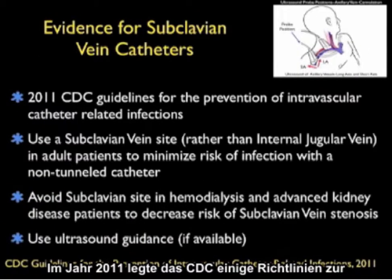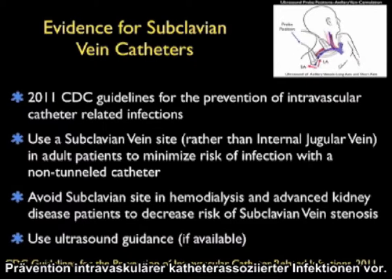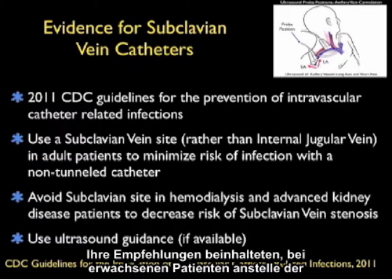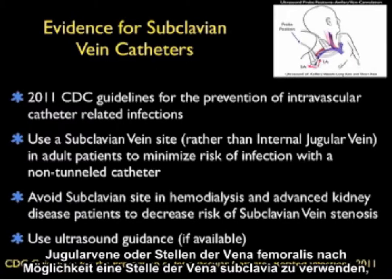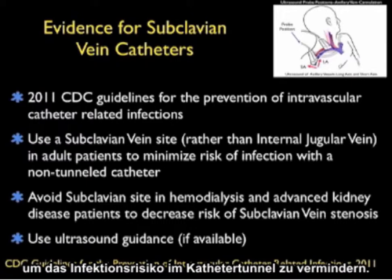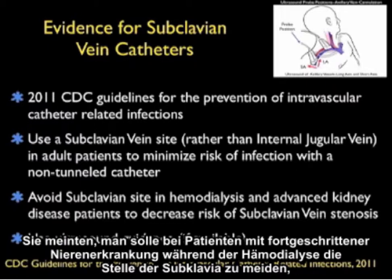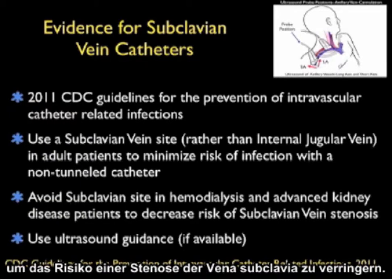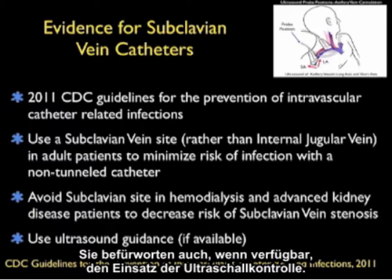In 2011 the CDC released guidelines for the prevention of intravascular catheter-related infections. Their recommendations included using a subclavian vein site rather than internal jugular or femoral vein sites in adult patients to minimize infection risk with a non-tunneled catheter. They advised avoiding the subclavian site in hemodialysis and advanced kidney disease patients to decrease the risk of subclavian vein stenosis, and advocated the use of ultrasound guidance if available.